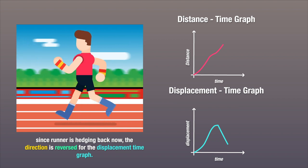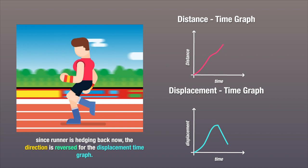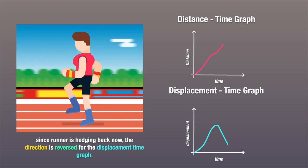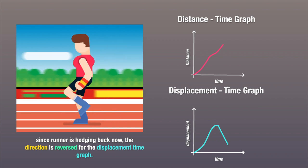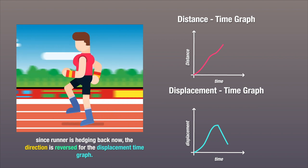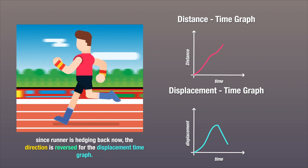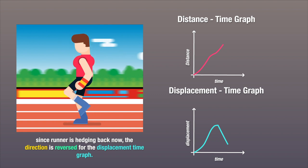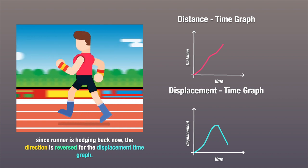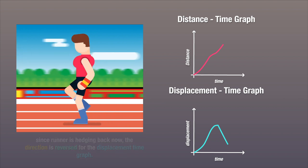Now, as the runner gets to the speed she wants to as she's moving down the track, we see straight lines on the two graphs again. But the slopes are different this time. For the distance time graph, the slope will be the same as it was when she started running first, because again, it's a scalar quantity. But for the displacement time graph, the slope represents velocity, which is the vector quantity, and therefore adopts a negative slope, since the runner's direction is now the opposite.